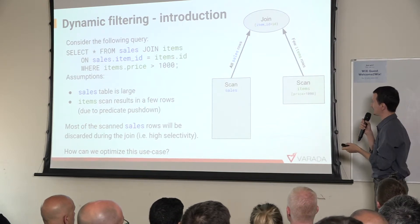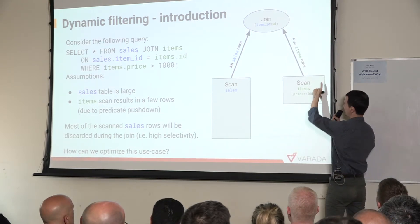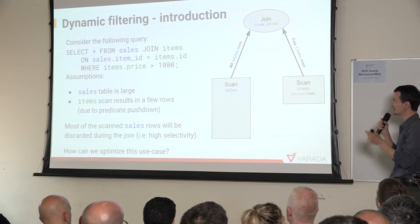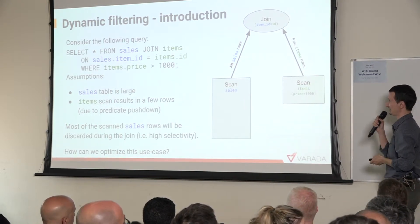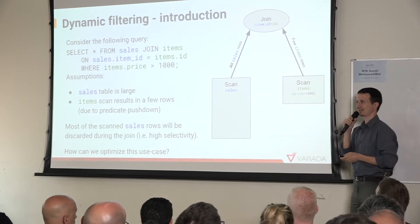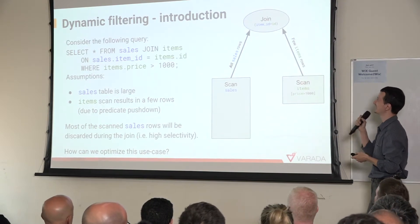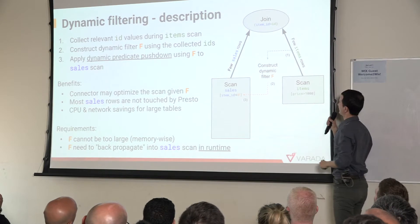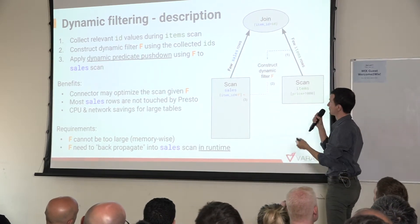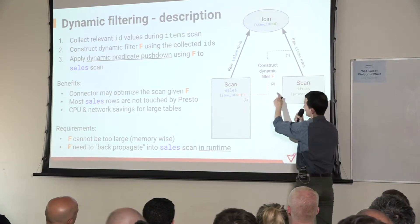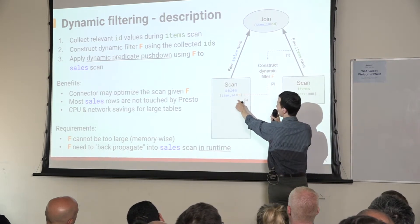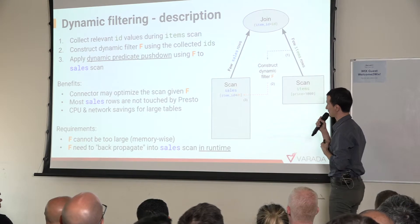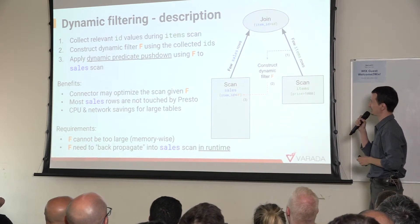What can we do? We could split it into two queries — first get the item IDs, then query the sales table — but that's a manual solution. The dynamic filtering solution is to enable the database to collect the relevant IDs from the rows coming from the item scan. Those IDs are used to construct a predicate called a dynamic filter, which after the scan is complete can be pushed down into the scan over the sales table. Our connector supports this dynamic predicate pushdown and it improves performance significantly.